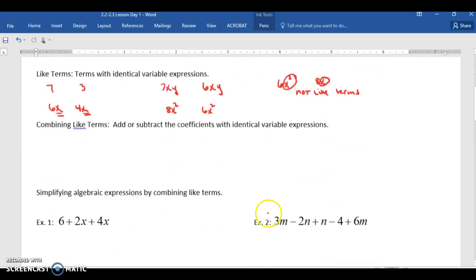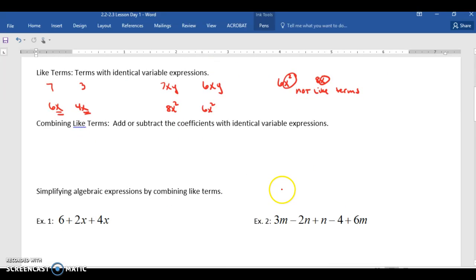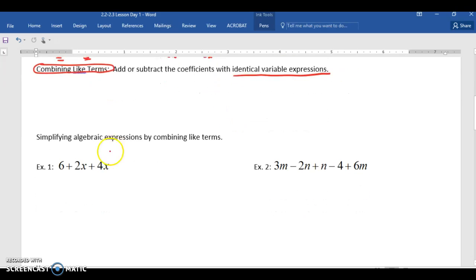Now when I look at something like this, 6x squared and 8x, these are not like terms because these variable expressions do not match up. So keep that in mind. Now combining like terms, very important concept. When we combine like terms, we add or subtract the coefficients with identical variable expressions.